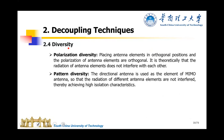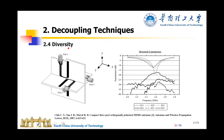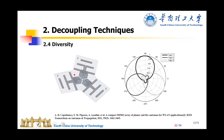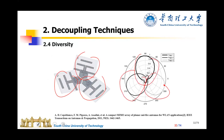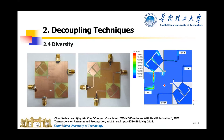Also, the third method is called diversity. The diversity method has two kinds: first, polarization diversity, and pattern diversity. This shows polarization diversity with three antennas. These are three antennas just oriented vertically. The difference is the polarization, so we can have good performance.